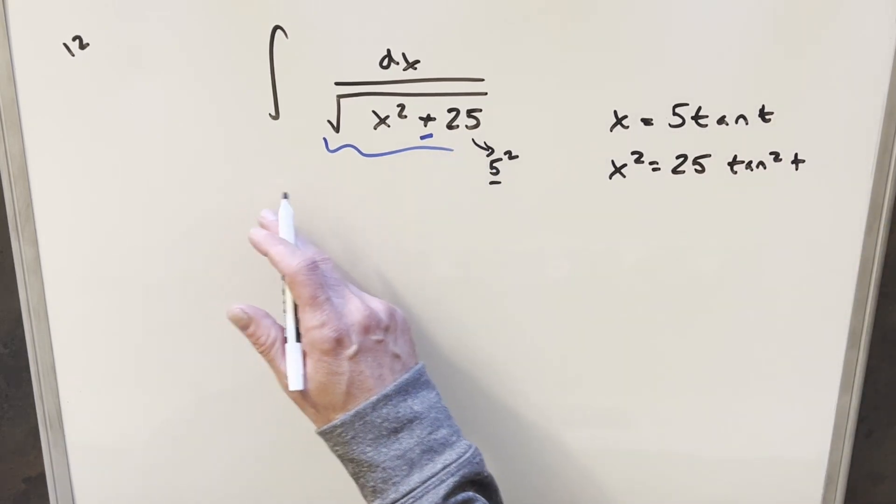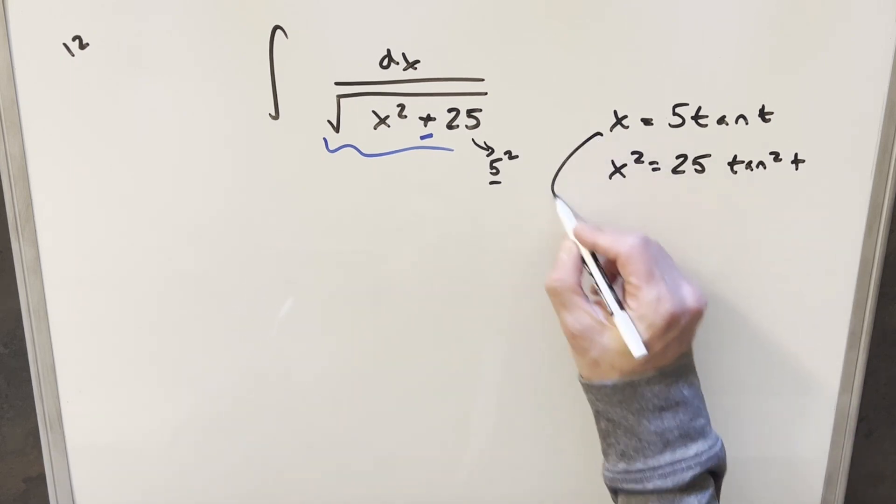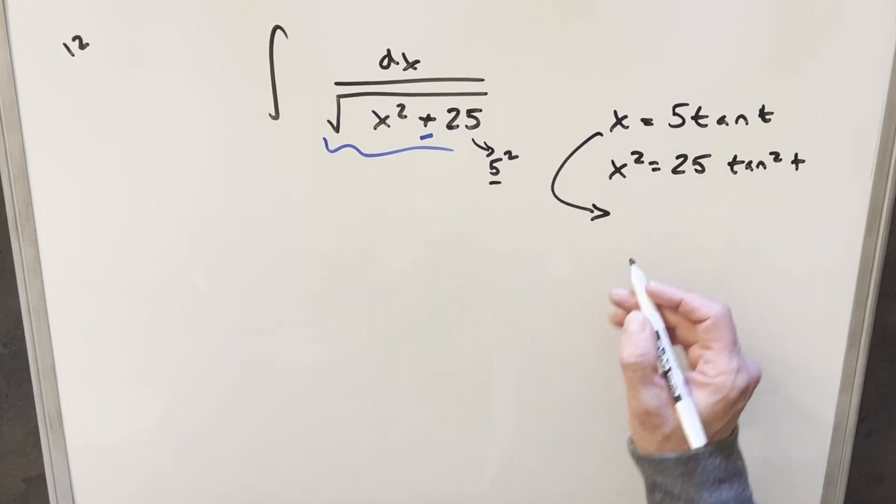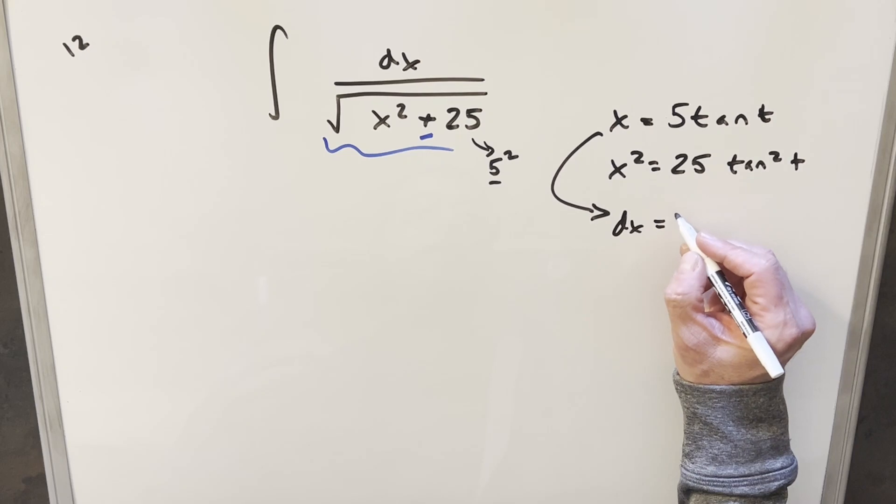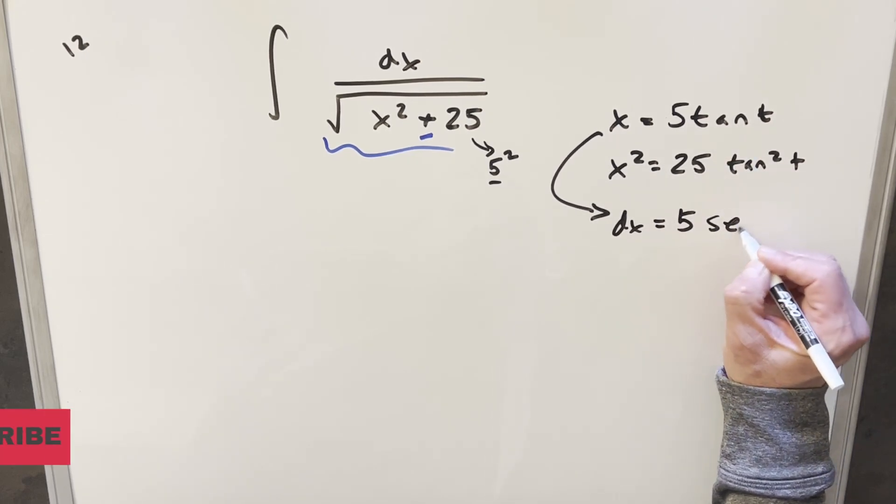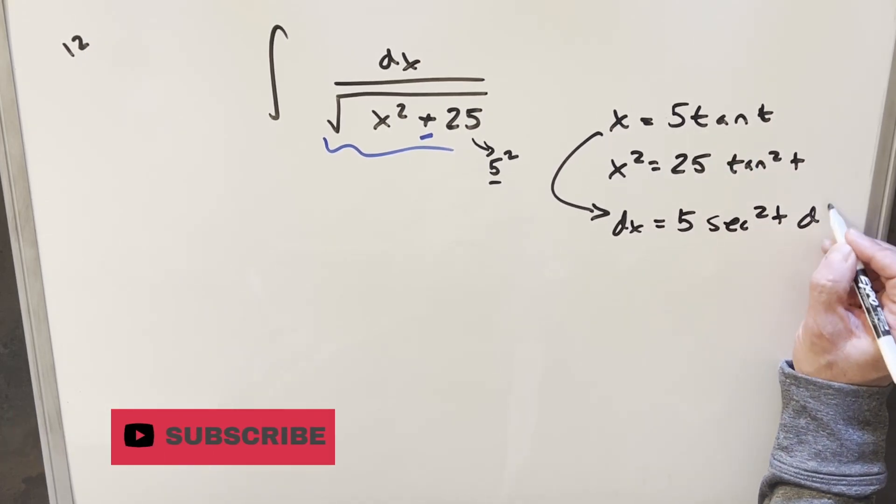And so that way, if you do this out, you can just factor out the 25. Then next, we'll just do our derivative in order to get our dx value. So we'll have dx. Then here, this is going to become derivative of tan of t. This is going to become secant squared of t dt.